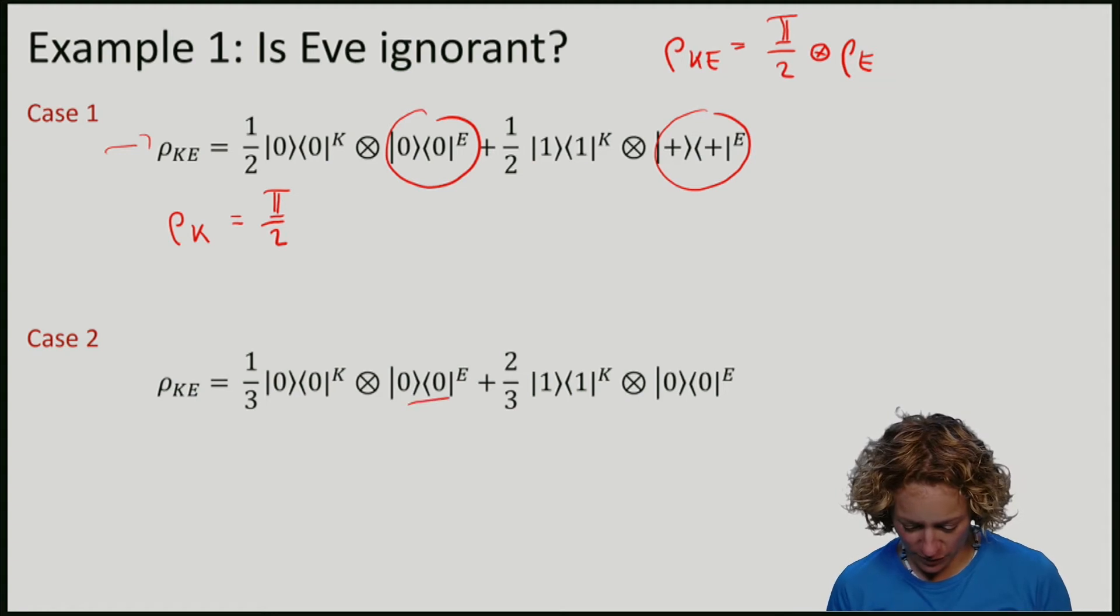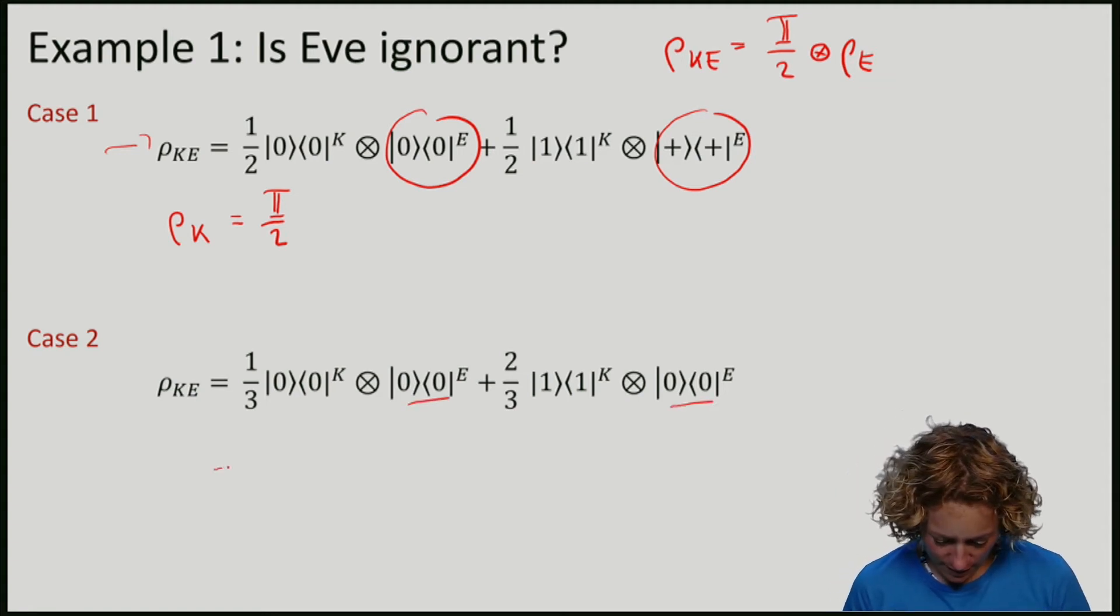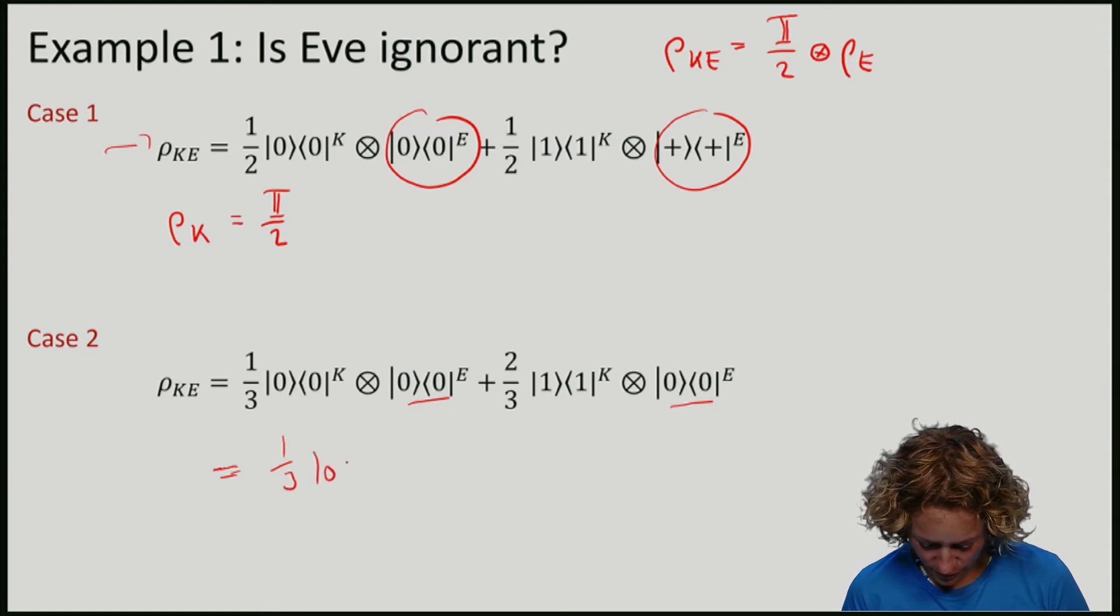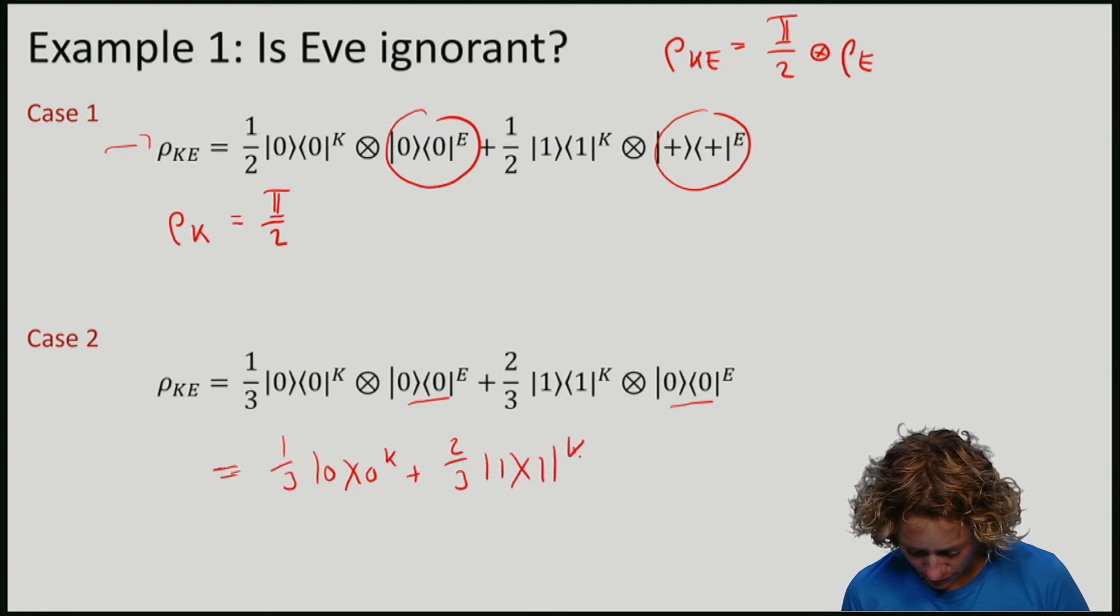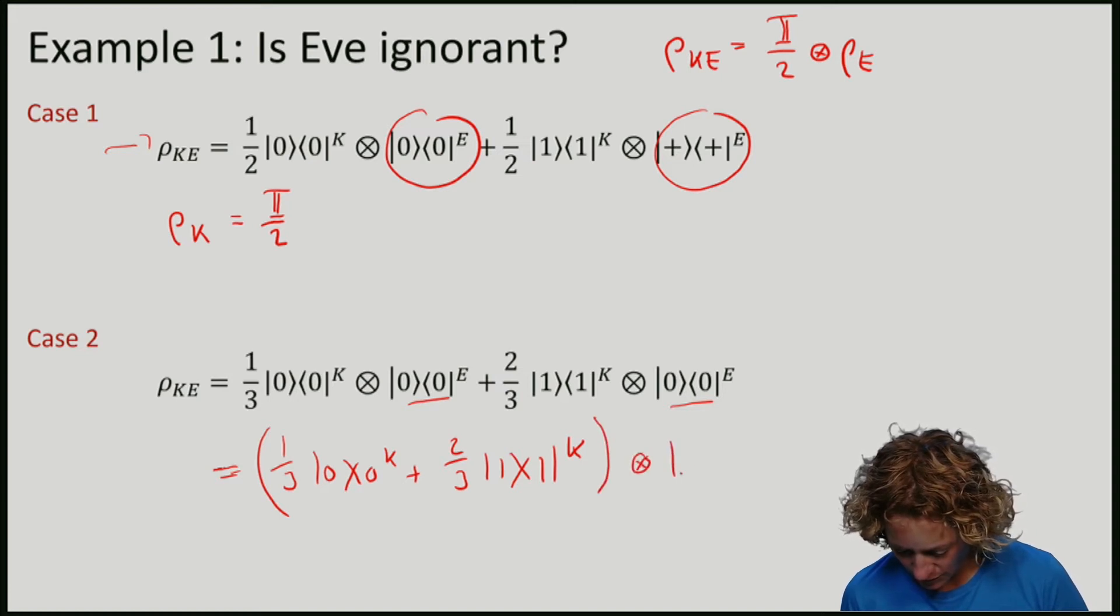because e here is always the same, as some state on k, namely this one, tensor the zero state on e.